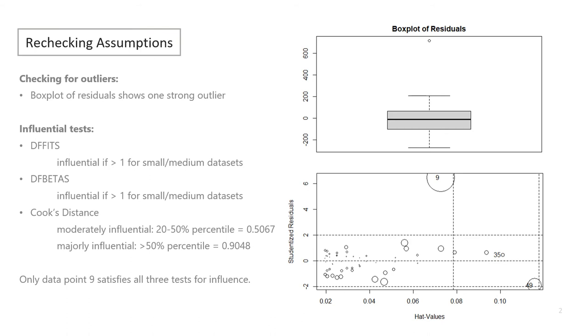Now that we know definitively that data point 9 is influential, we can make decisions on how we want to move forward. Data point 9 is Washington, D.C., which has an unusually high rate of crime. Washington, D.C. also happens to be a 100% metropolitan area, which likely contributes to this higher rate. Because D.C. shows significantly different rates of crime than any of the other states, I am going to remove this data point. For future research, I recommend crime and D.C. be analyzed separately instead of part of the U.S. state's data set.